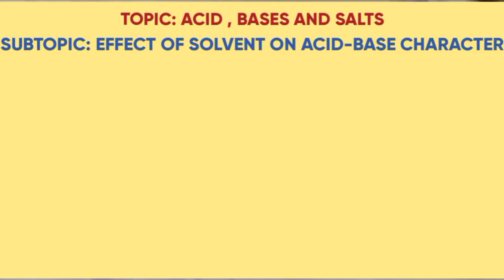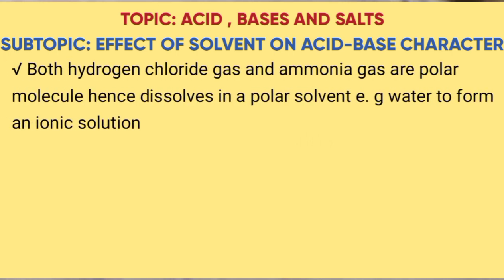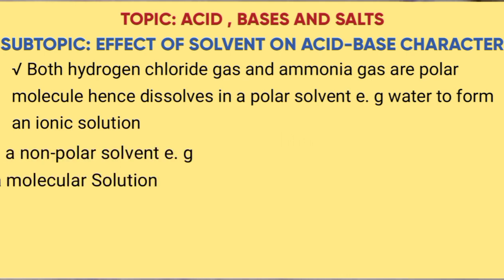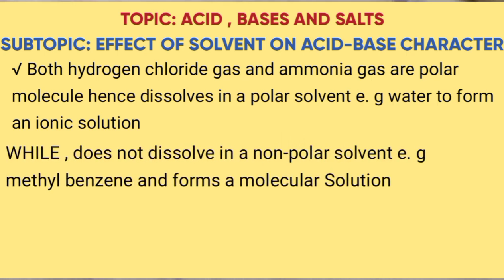Here we are given the differences in properties of solution obtained when hydrogen chloride gas, i.e. an acid gas, or ammonia gas, a basic gas, is dissolved in water or methylbenzene. Note that both hydrogen chloride gas and ammonia are polar molecules, hence they dissolve in a polar solvent, e.g. water, to form an ionic solution, while they do not dissolve in non-polar solvents, hence forming a molecular solution.